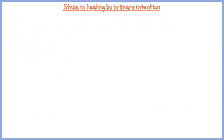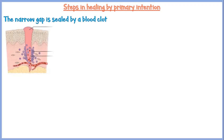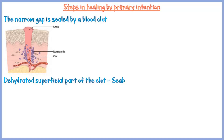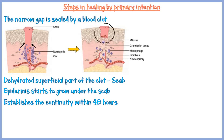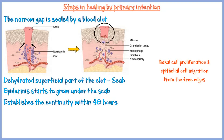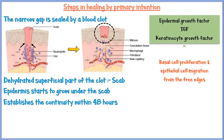In healing by primary intention, the narrow gap between the wound edges is first sealed by a blood clot. The superficial part of this clot will later become dehydrated, which is then called the scab. The epidermis starts to grow under the scab and establishes continuity within 48 hours. This process occurs via basal cell proliferation and epithelial cell migration from the free edges, stimulated by chemicals like epidermal growth factor, transforming growth factor alpha, and keratinocyte growth factor.